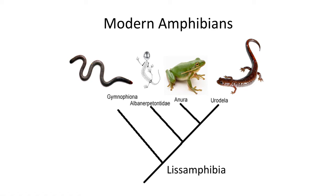Modern amphibians are split into three major groups: the Gymnophiona, which includes the legless amphibians called caecilians, which live underground in tropical regions of the world; the Anura, the frogs; and the Urodela, including the salamanders, which are sometimes called the Caudata, since they have adult tails.